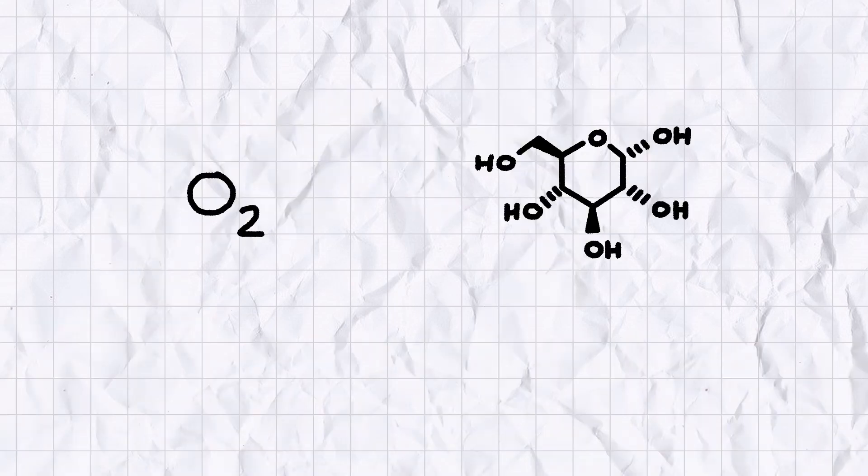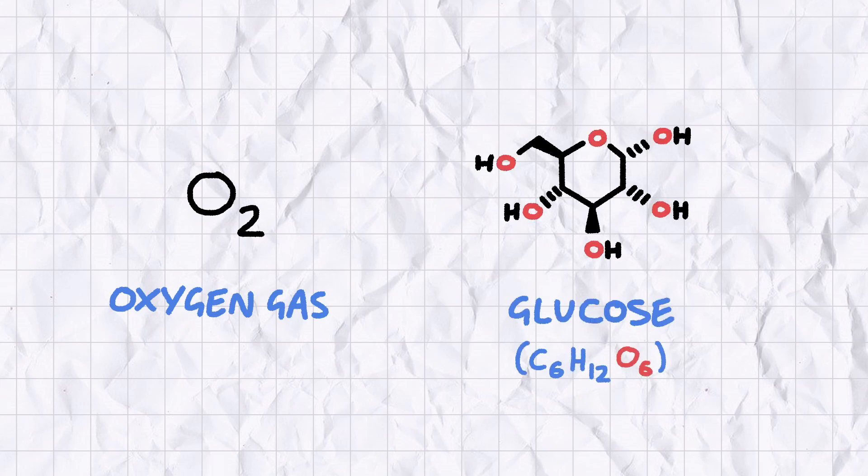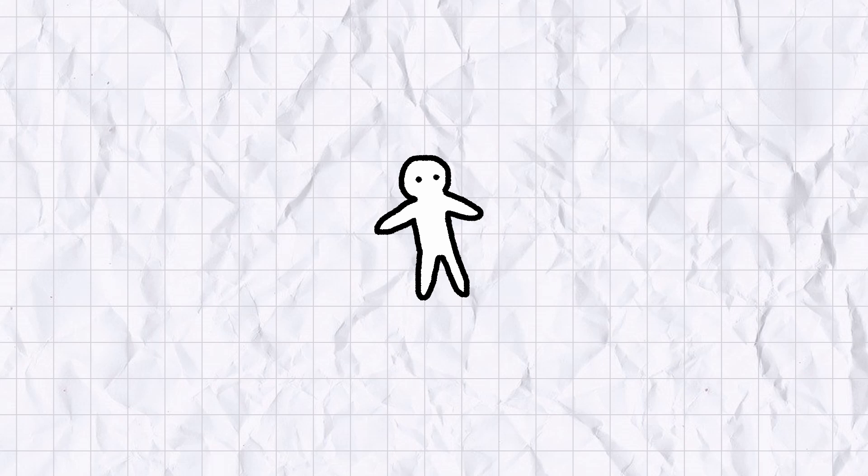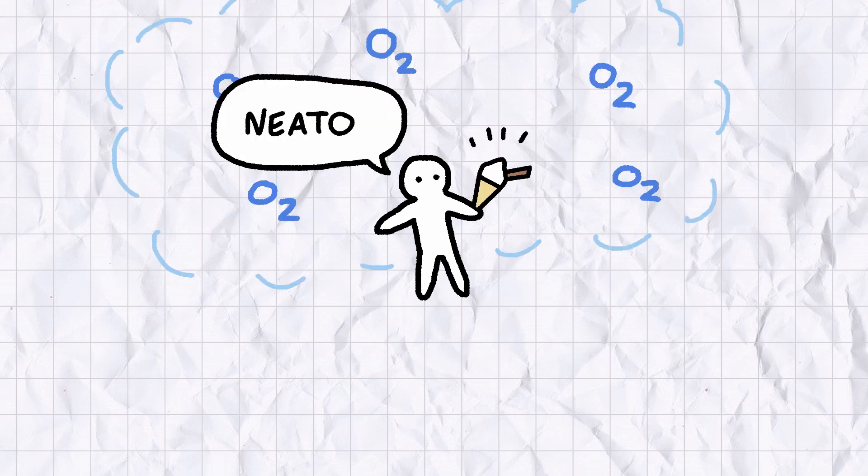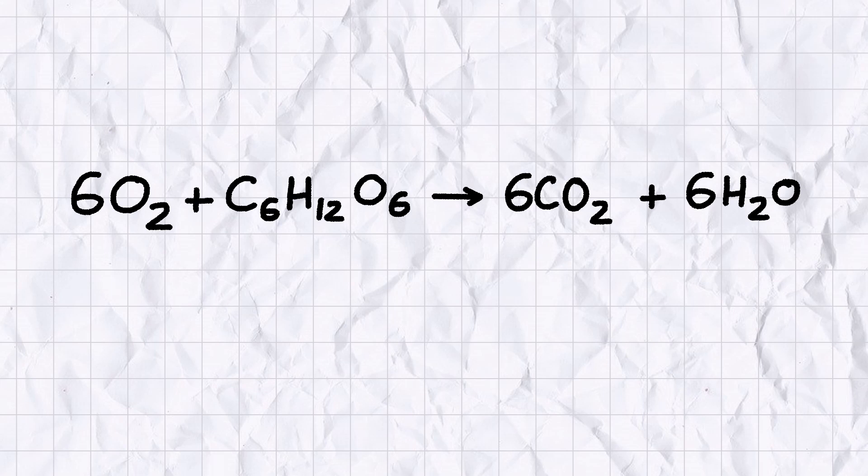The main components of aerobic respiration are oxygen gas and glucose, a simple sugar which, as you can see, is also partly made out of oxygen. Humans take in these substances from our environment. We get oxygen from the air and glucose from the food that we eat.